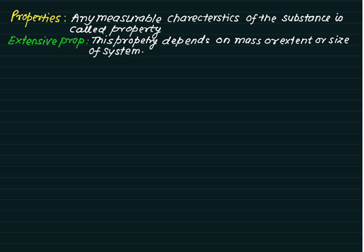An extensive property is defined as one that depends on the mass, extent, or size of the system. For example, mass is an extensive property. If we have a larger volume, we have a larger mass; if we have a smaller volume, we have a smaller mass. So depending upon the size of the system, we can have more or less value of that property. Such a property is called an extensive property.